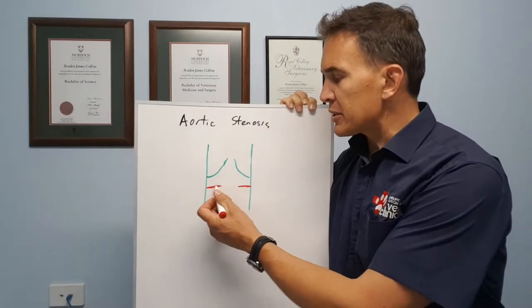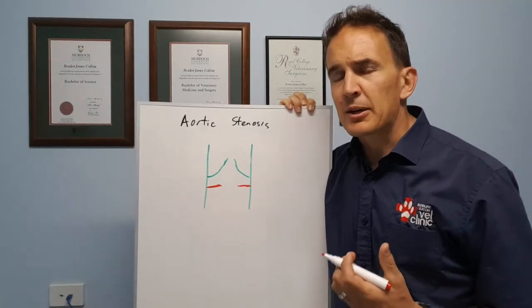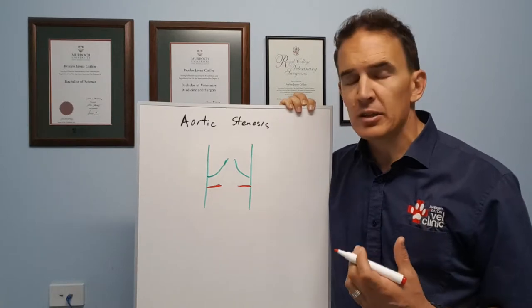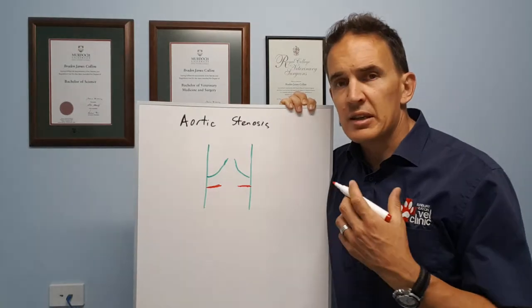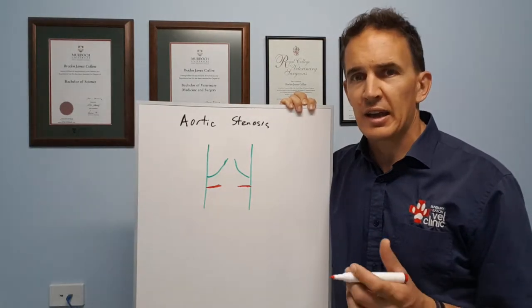This subaortic stenosis is really the most common thing we're going to see and we tend to see that mostly in large breed dogs. Boxers, golden retrievers are probably overrepresented, but many large breed dogs. What we tend to find is it's a condition that we notice more as they age.